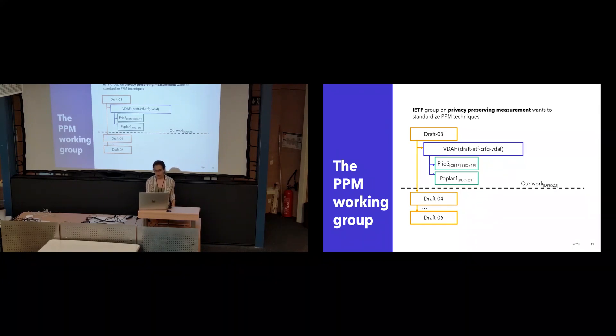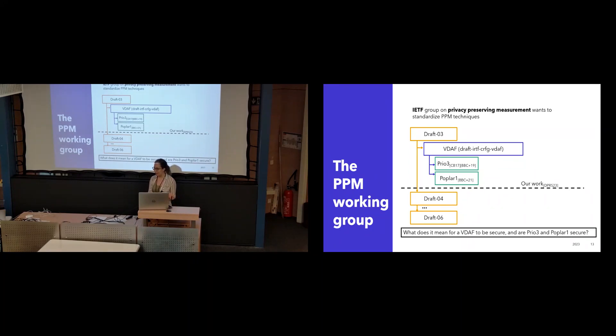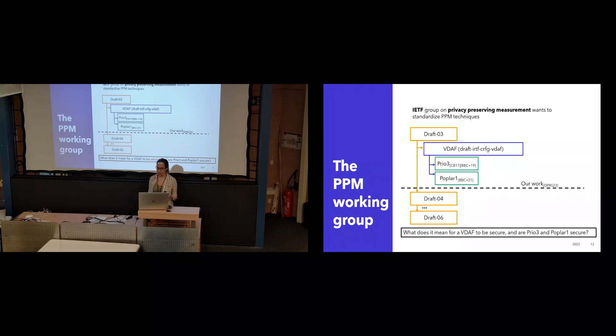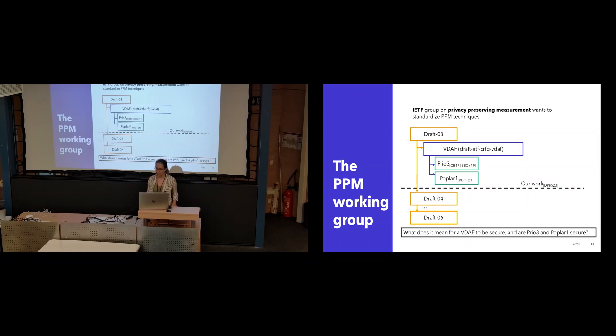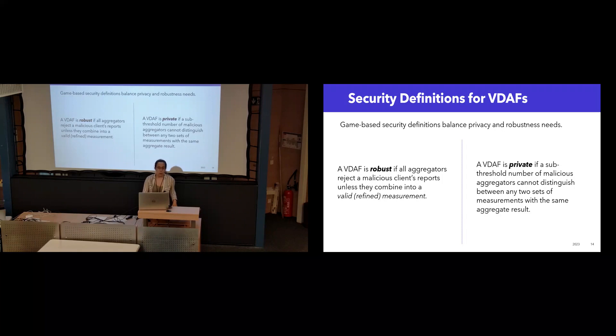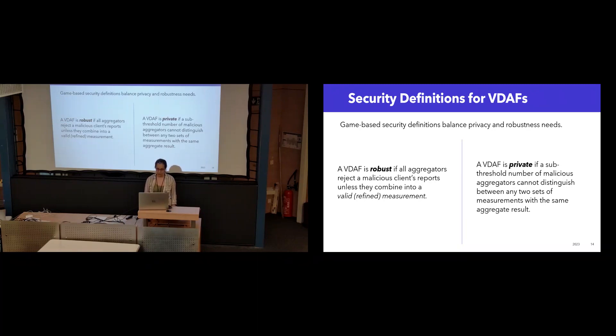So then we came in after draft three, and we decided to include some provable security analysis in this effort to define what does it mean for VDAF to be secure, to make sure that we can give comparable security definitions for different examples of the cryptographic primitive, and to evaluate the two candidate protocols for standardization and see do they actually meet our definitions.